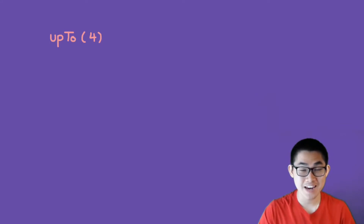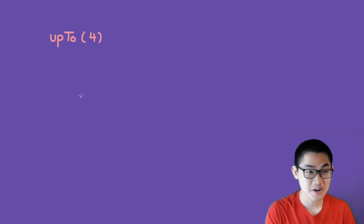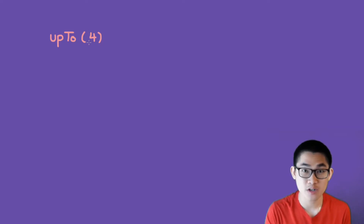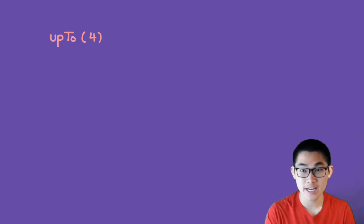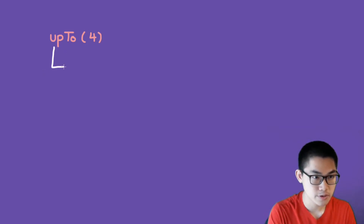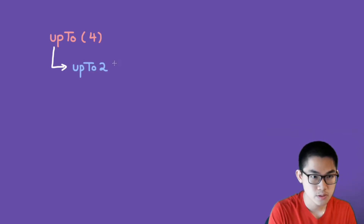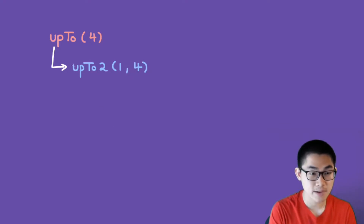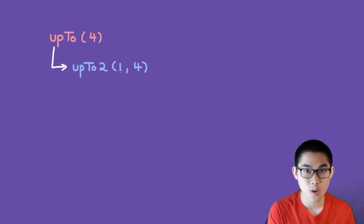The first step to doing any recursion is to draw the recursion tree. Here we have upTo(4). We have to tell the computer that we want to print from 1 to 4. We simply call a different function — a second helper function with an extra parameter telling it that we're going to start at number 1. You will see why this works in a second.